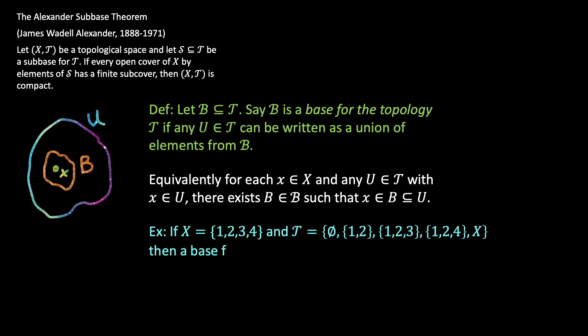For example, if X is the set {1, 2, 3, 4} and I put a topology on it that has the empty set, the set {1,2}, the set {1,2,3}, the set {1,2,4}, and X itself, then a base for this topology could be just the sets {1,2}, {1,2,3}, and {1,2,4}.